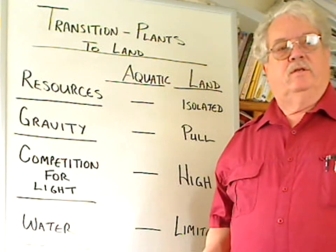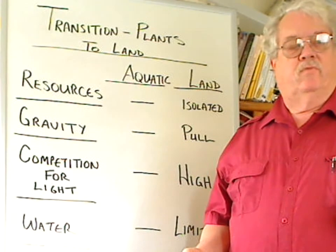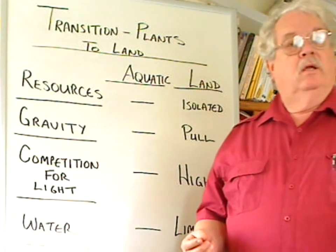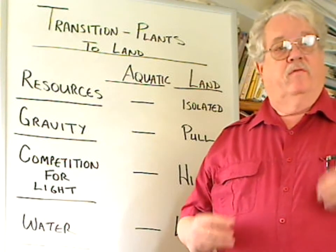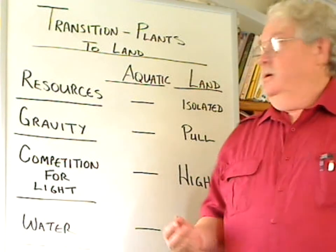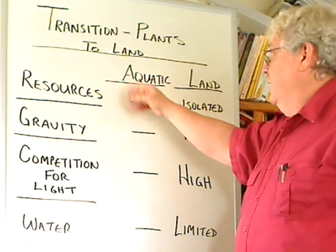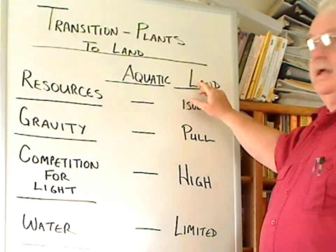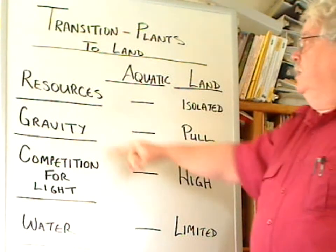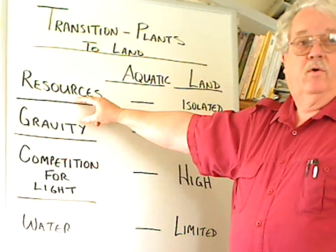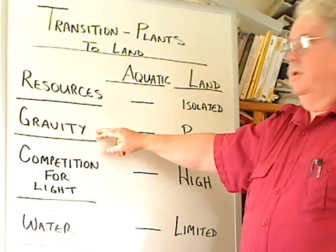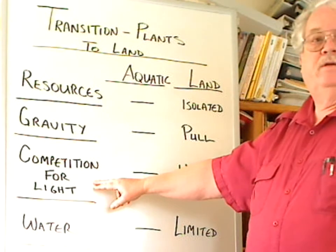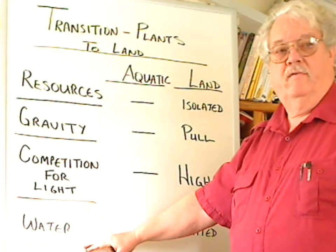There are several things that we have to consider in the movement of plants from water to land existence — the kinds of factors that the plants had to evolve against in transiting to land. We can look at a comparison from the aquatic to the land environments relative to resource availability and how they're acquired, the pull of gravity, competition for light, and water availability.